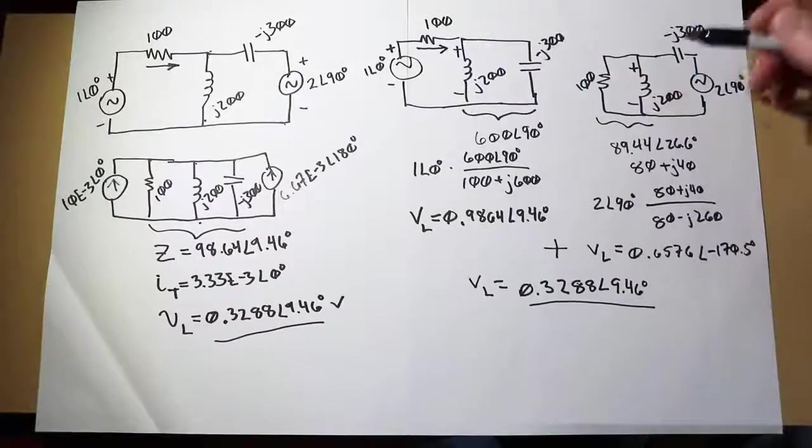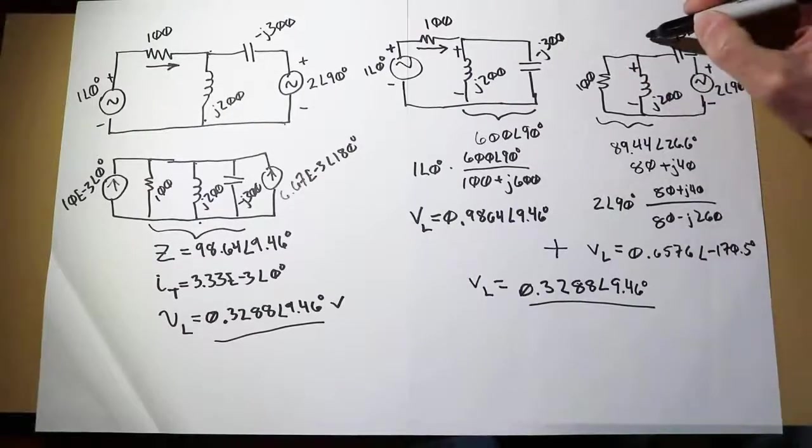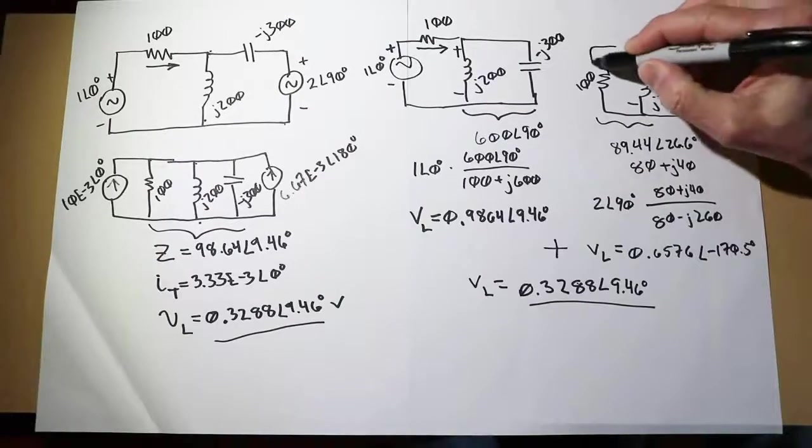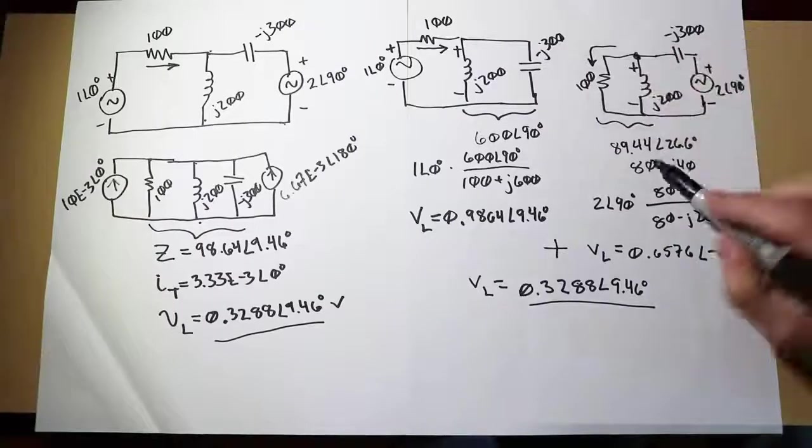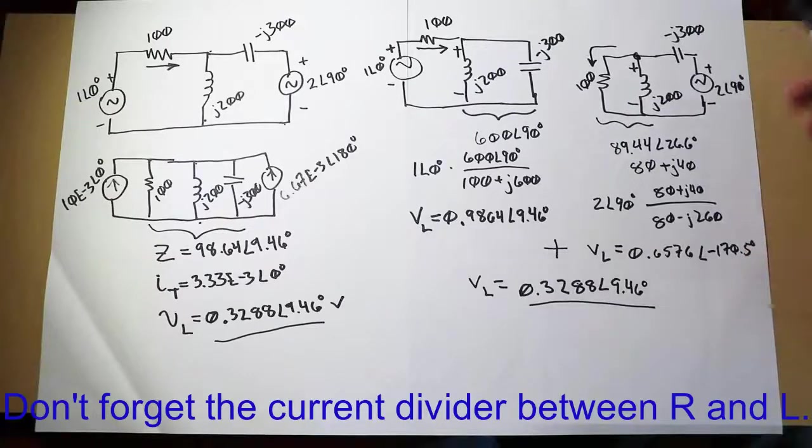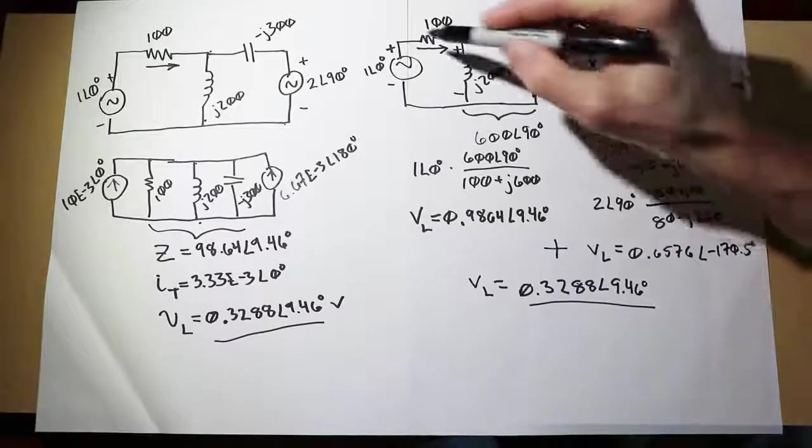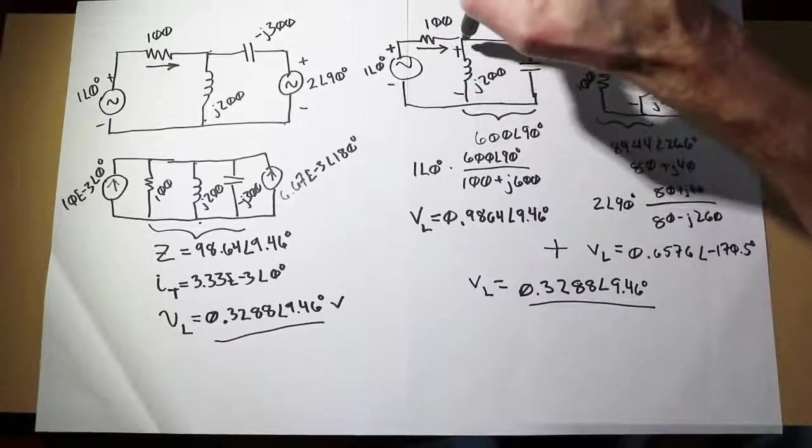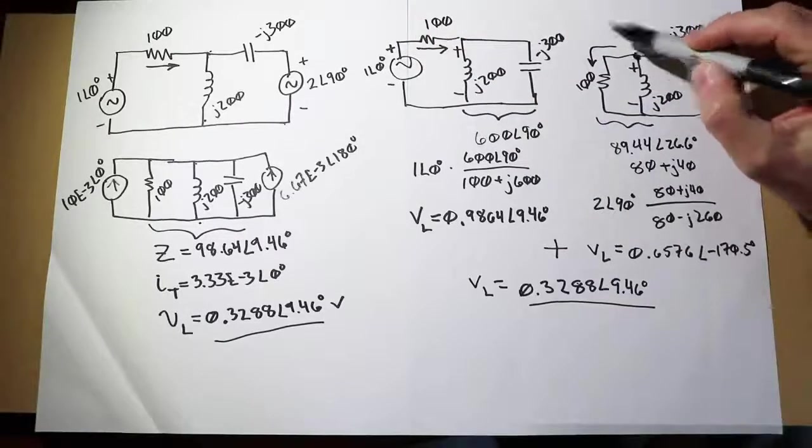I'll do the same thing over here. To find the current going through the 100, this polarity plus to minus would produce a current going through the cap like so, and that will split at this node, part down through the inductor, part down through the resistor. The technique would be similar. We could take the minus J300, add that to this impedance 89.44, divide that into the 2 volts at an angle of 90 degrees. However, this current is effectively flowing in the opposite direction compared to this current. This is flowing right to left, whereas in this case it's flowing left to right. So this current would have to be subtracted from this current.